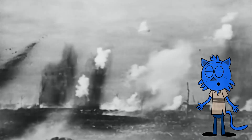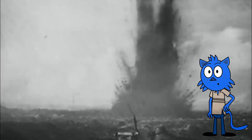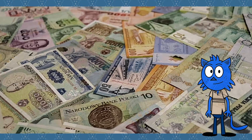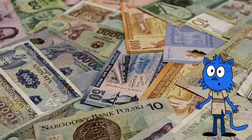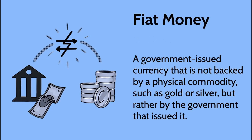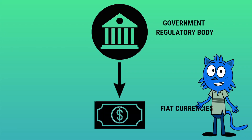Fast forward again to the 20th century, where the world saw a departure from the gold standard, mainly due to World War I and the Great Depression. This led to the establishment of fiat currencies — money declared by the government to be legal tender. Fiat currencies are legal and valuable because a government maintains their value. The 20th century brought more changes, with the global adoption of the gold standard, the rise and fall of the Bretton Woods system, and the evolution of fiat currencies — the money we use today, backed by the trust and credit of the economies that issue them.